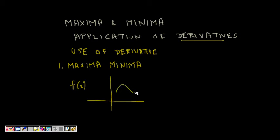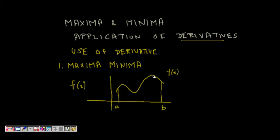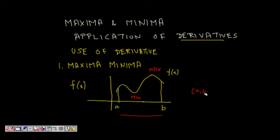Let's draw a small graph. From point a to point b, this is the function. What is maxima and minima here? The maximum value in the interval [a, b] is the maxima, and the minimum value is the minima. In a given interval, which could be the whole number line, you have to find the maxima and minima of the function.